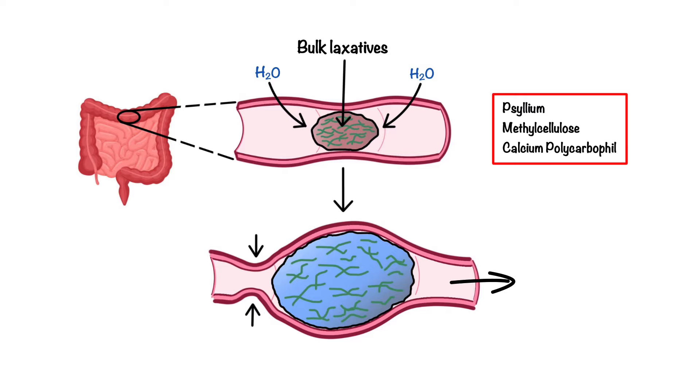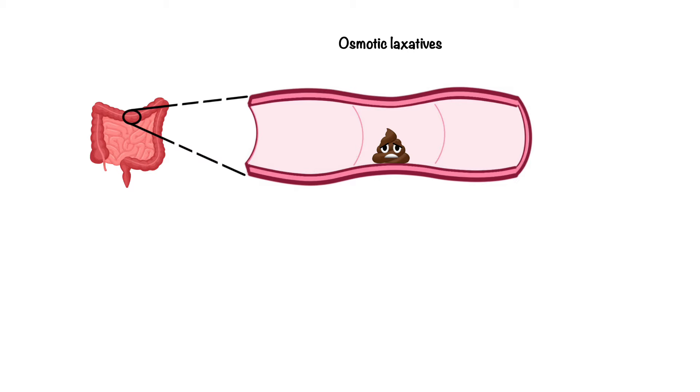Another type of commonly used laxatives are osmotic laxatives. These include non-absorbable but soluble compounds such as magnesium citrate, magnesium hydroxide, lactulose and polyethylene glycol.